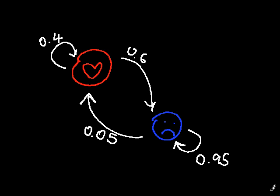The described situation can be shown in a diagram. Every month, 40% of those who already love homework continue to do so, but 60% of homework lovers transition to hating homework. And every month, 95% of those who already hate homework continue to do so, but 5% of these transition to loving homework.